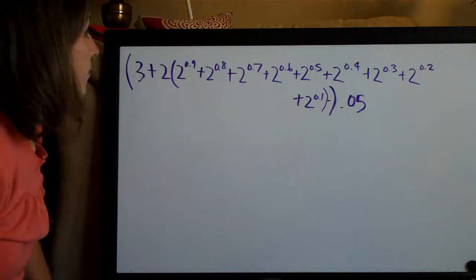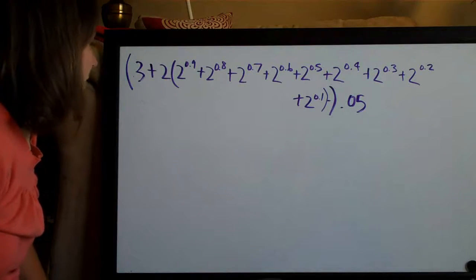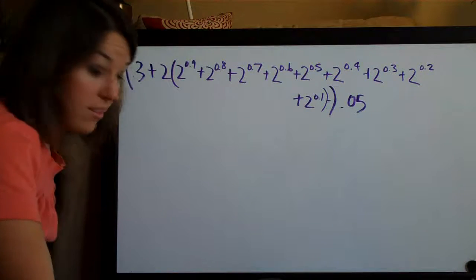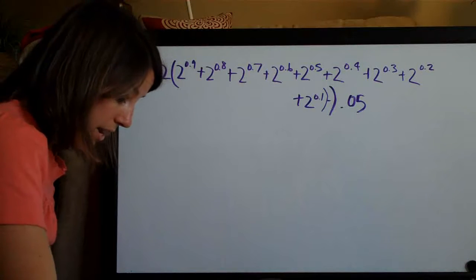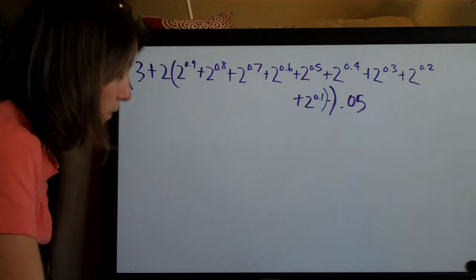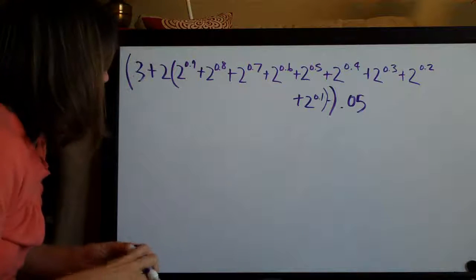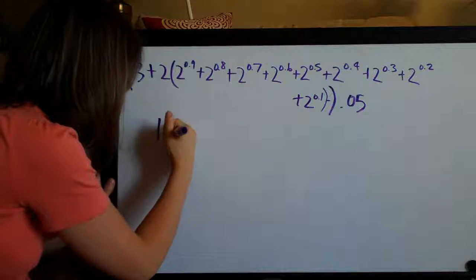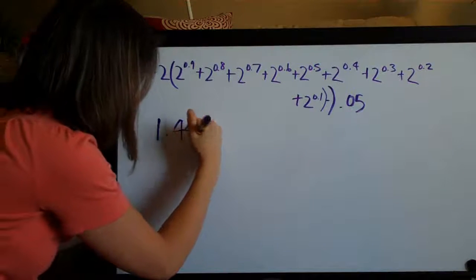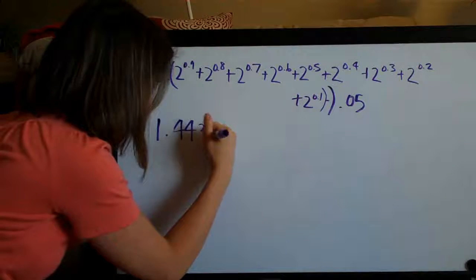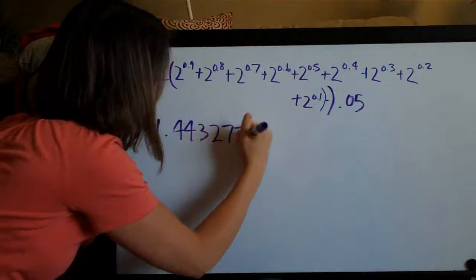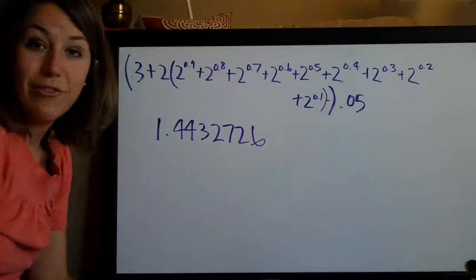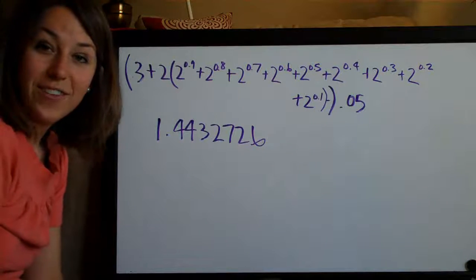Since all trapezoidal rule problems are similar to this, I went ahead and did the calculations ahead of time. When you plug this into the calculator, the final answer you get is approximately 1.44. That's your final answer.